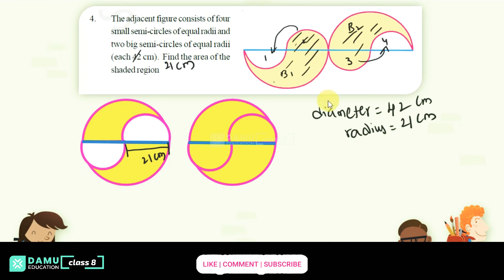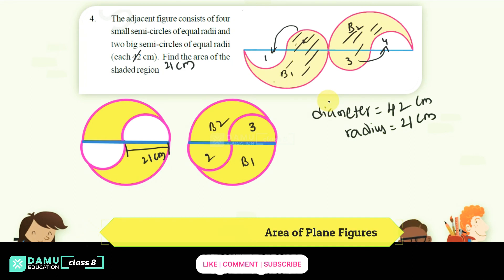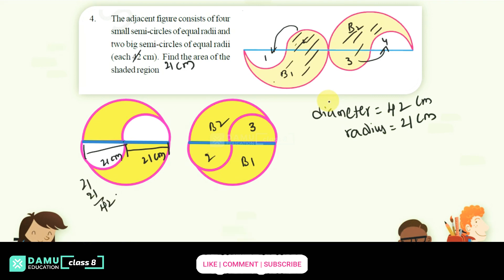If you find this circle's area, then it will be the shaded region. This is 2 and 3, this one came to places, this one is bigger 1, this is bigger 2. This is 21 centimeter, this is also 21 centimeter. If you add 21 plus 21, then it becomes 42 centimeter. Diameter is 42 centimeter, radius is 21 centimeter.